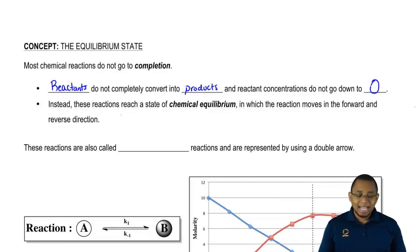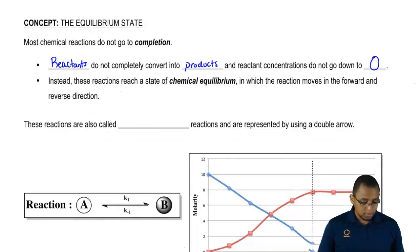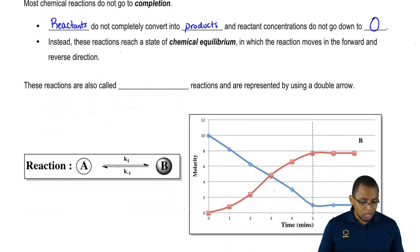Instead these chemical reactions reach a state of chemical equilibrium in which the reaction moves in the forward and the reverse direction. Remember, we talked about this. We say that these reactions have double arrows. One going in the forward, one going in the reverse. And because they can go in the forward or the reverse direction, they're called reversible reactions.